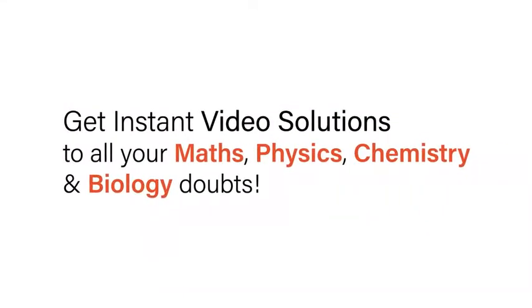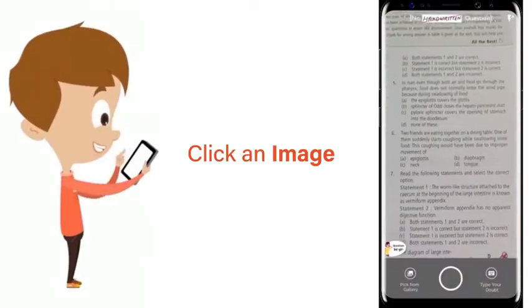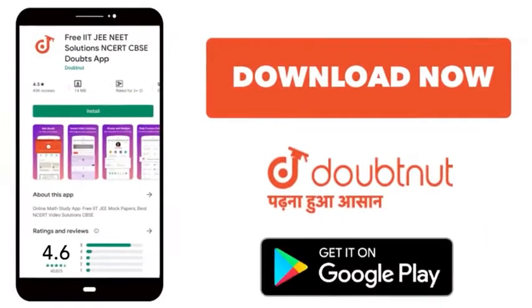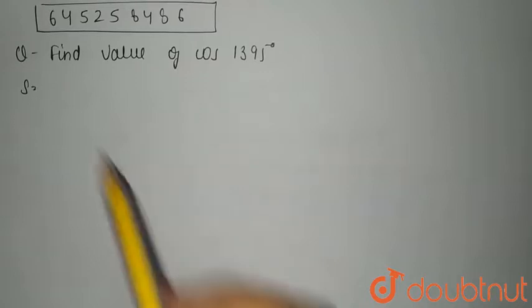With Doubtnet, get instant video solutions to all your maths, physics, chemistry, and biology doubts. Just click the image of the question, crop the question, and get instant video solution. Download Doubtnet app today. Hello students, today's question is find the value of cos 1395 degree.